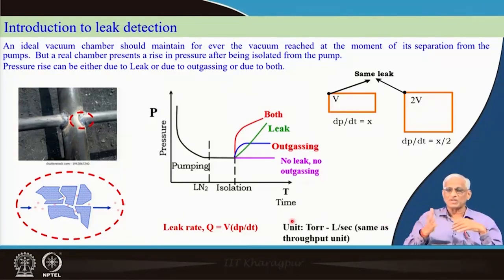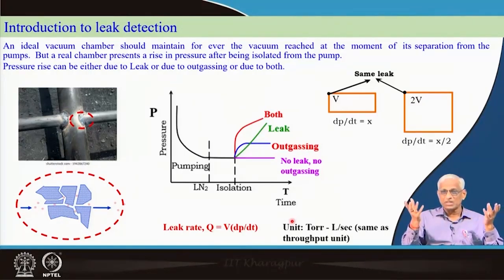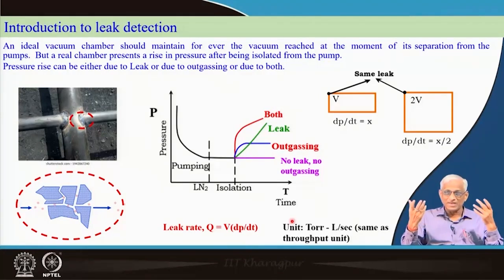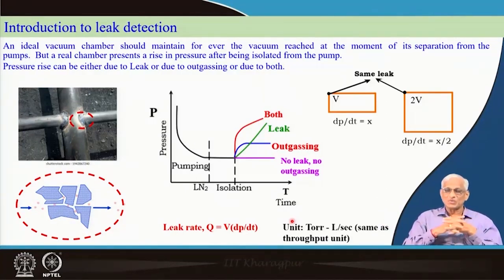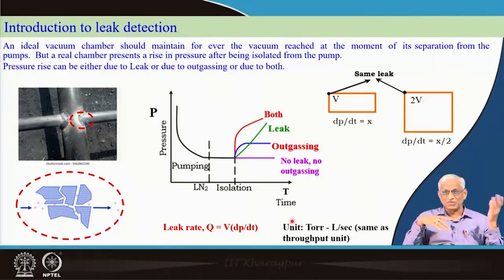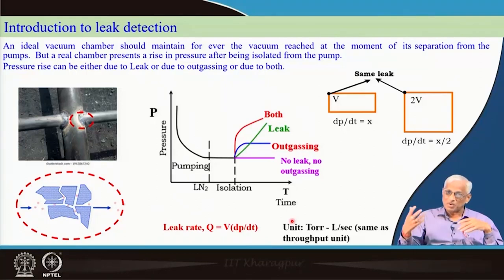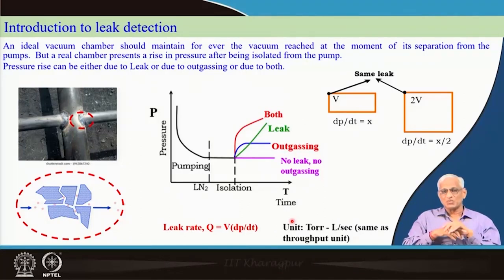We do not have the pump because sometime or other we have to isolate it — particularly for sealed-off devices like bulbs, TV tubes, oscilloscopes, or X-ray tubes. There are many devices which cannot be continuously connected to the pump. There are also devices which are continuously connected, but there too we want very good vacuum. Very good vacuum can come if leaks and degassing are reduced — then the pump can fully use its potential. So in both cases we should try to solve both leak as well as degassing problems.